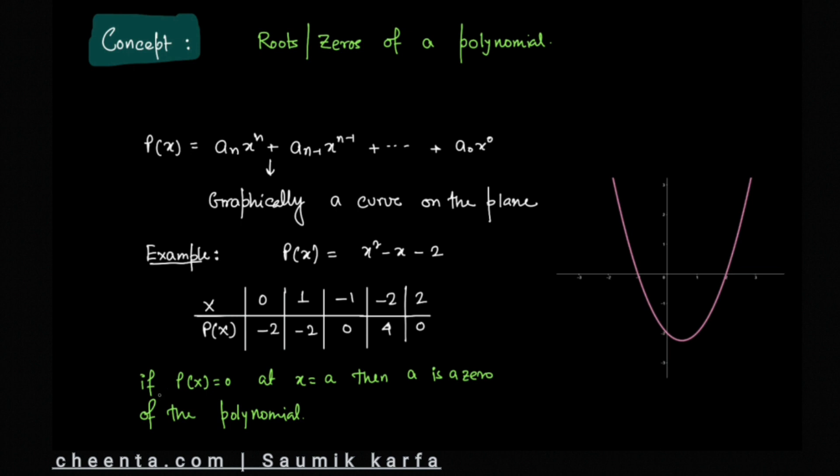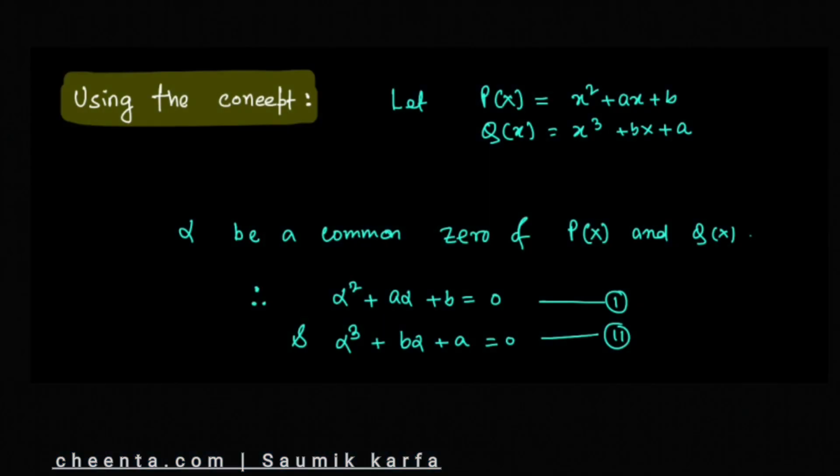We also have this standard result: p(x) = 0 at x = a if a is a zero or root of the polynomial. Using this concept in our problem, if we assume we are given two polynomials p(x) = x² + ax + b and q(x) = x³ + bx + a, and if α is a common root meaning it's a root of the first polynomial as well as the second polynomial,